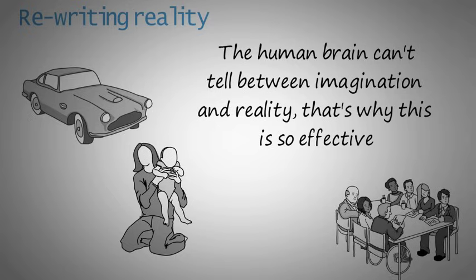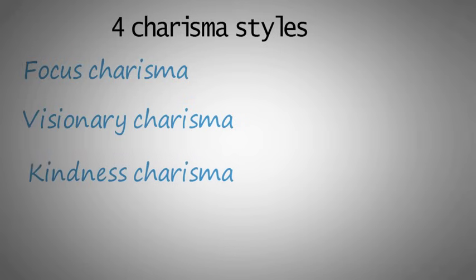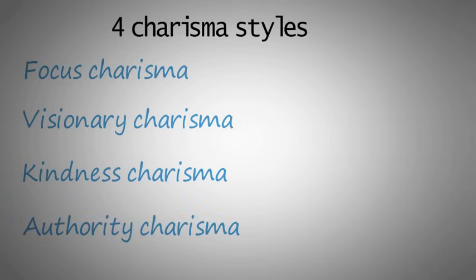Hopefully, you got a better idea on how to achieve charisma now. But not all charisma is the same. Olivia actually narrows it down to four charisma styles you can achieve depending on which of the three components is the strongest. They are Focus charisma, Visionary charisma, Kindness charisma and Authority charisma.